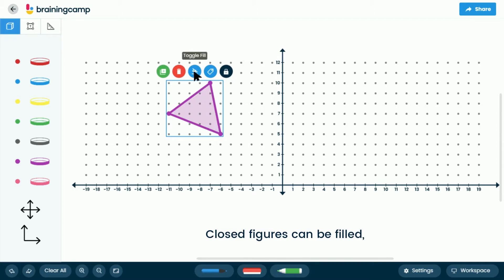Closed figures can be filled, and vertices, or points in the plane, can be labeled with their ordered pairs.